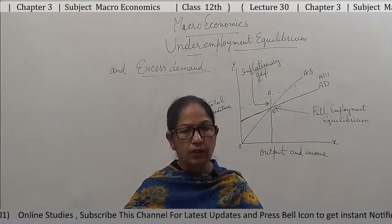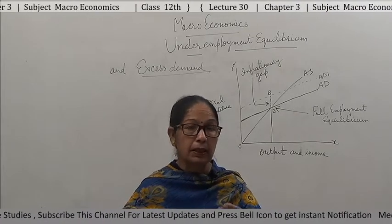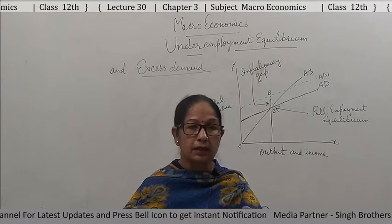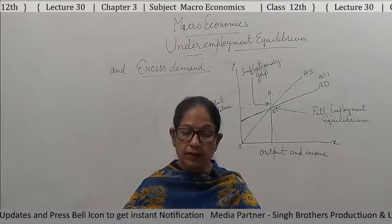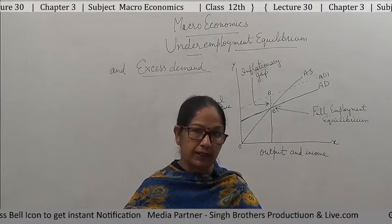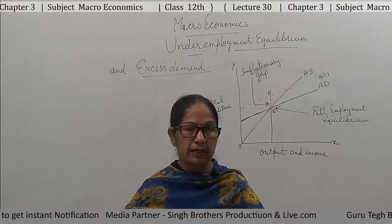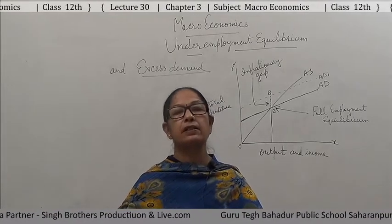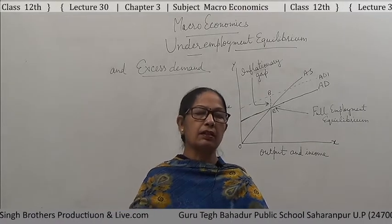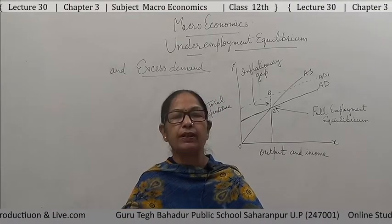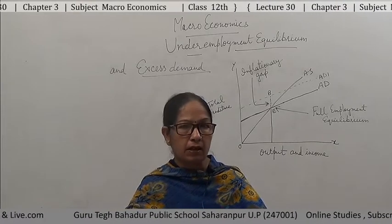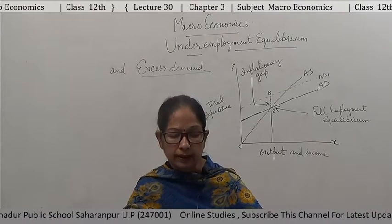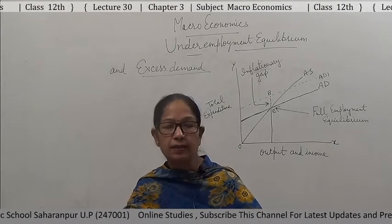Another cause is increase in private consumption expenditure, which causes demand to exceed supply. Next, increase in autonomous investment or private investment done by government — when that also increases, it is a cause of excess demand. And increase in public expenditure — when government starts many projects for public welfare and spends a lot of revenue on public projects, then demand level exceeds supply level.